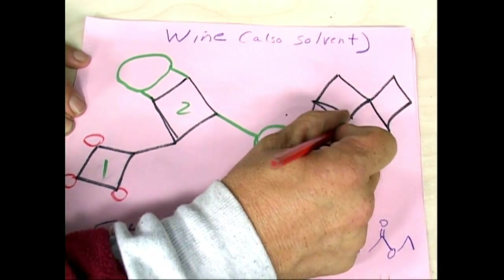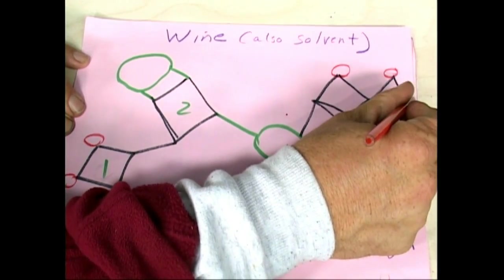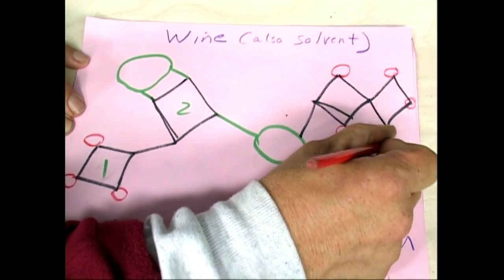There's going to be two carbons on this side. Three, one, two, one, two, three. So those are different.